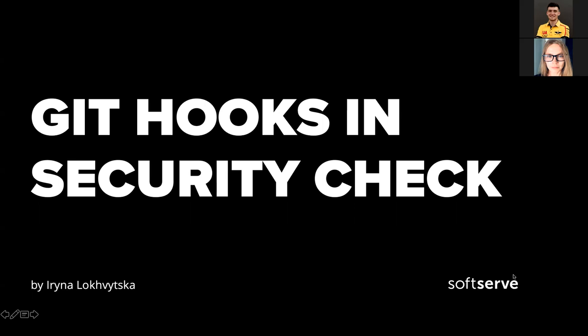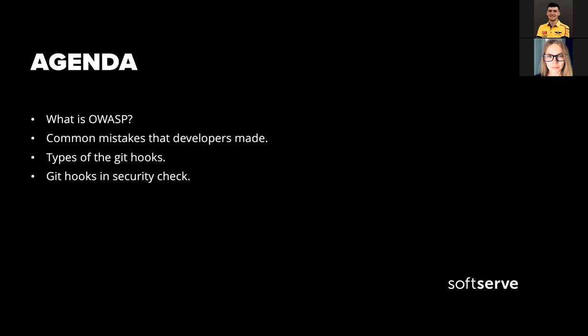But it's our main mistake. Today we will go through topics like what is OWASP, common mistakes developers make, and I'll show you some code examples with typical errors. We will also talk about types of Git hooks, and what Git hooks can do in security checks. I'll show some Git hooks we can use — client-side and server-side — and look at examples of common mistakes and how these Git hooks can find them.